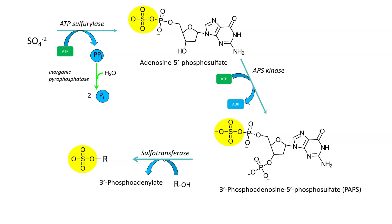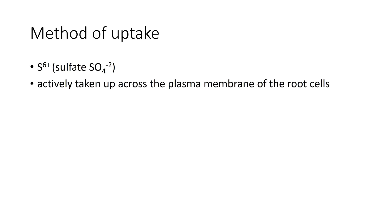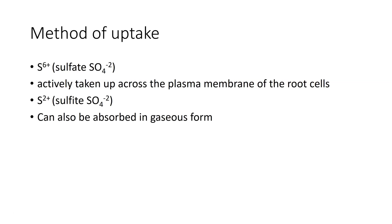That material can then be used and transferred from point A to point B. When we look at the method of uptake, sulfur comes up in a lot of different forms. It's normally absorbed as S+6, which is the sulfate ion. Sulfate is actively taken up across the plasma membrane of root cells — it's highly soluble and it will move. Sulfite can also be picked up, and these can be absorbed in the gaseous form. If you've got a little bit of sulfur in the air, it can be absorbed into the plant even through leaves in the gaseous form. A little bit can be beneficial, and you can actually apply sulfur in a foliar format that will be absorbed by the plant.